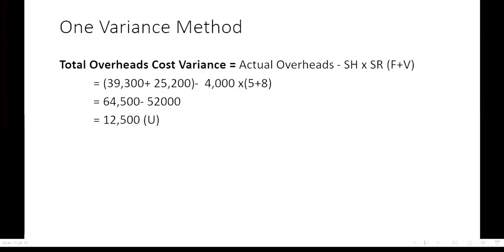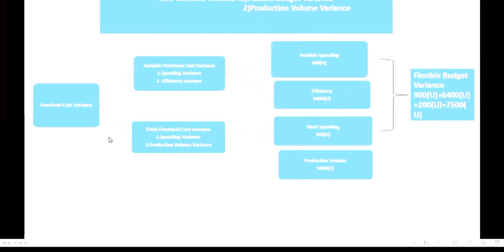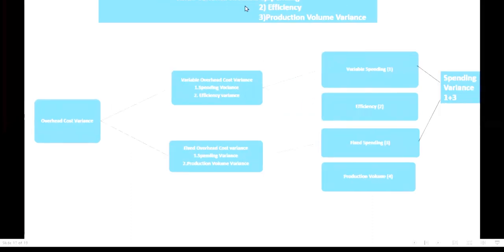The one-variance method is: actual overhead total (variable plus fixed) minus standard hour into standard rate (variable plus fixed) = 12,500. At a glance — two-variance method gives flexible budget variance (7,500) and production volume variance (5,000). Three-variance method groups variable spending and fixed spending together as one spending variance (1 + 3 = 4), plus efficiency variance and production volume variance — three variances total.